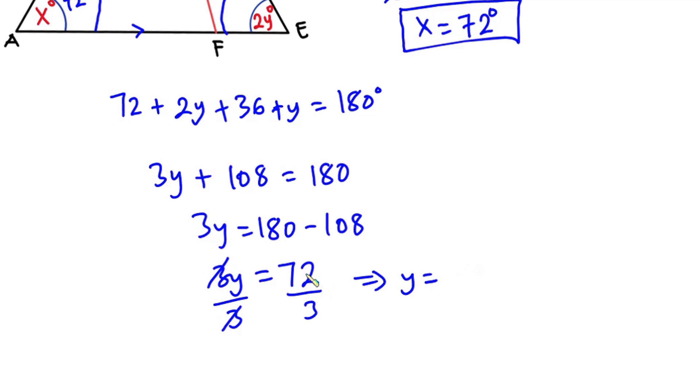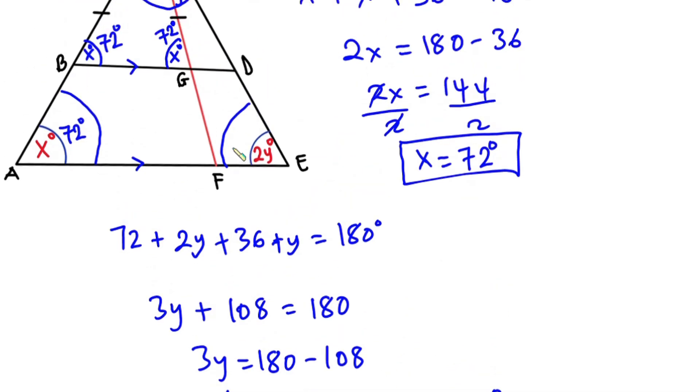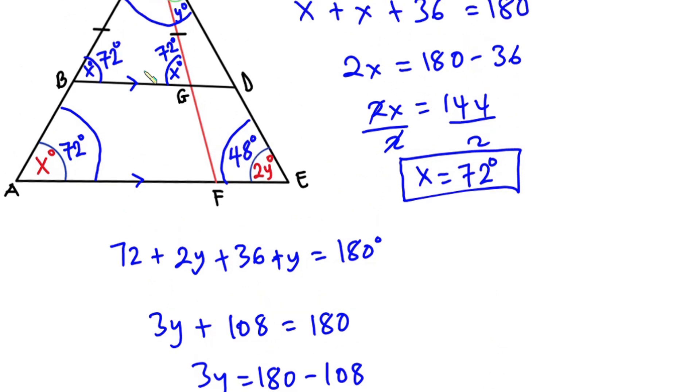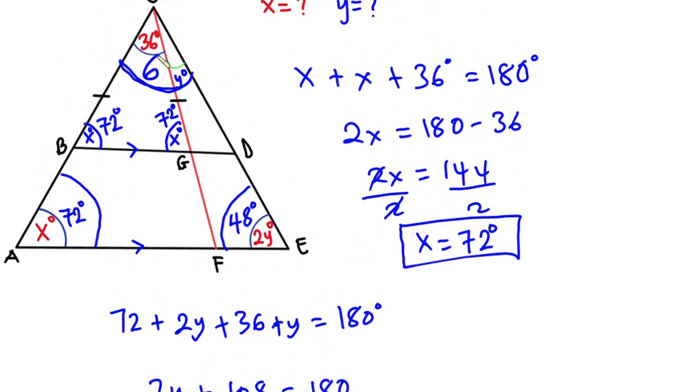Now we have y is equal to 72 divided by 3, which is 24. So we have y to be 24 degrees. What it means is that this angle over here is 48 degrees, and then this angle is 60 degrees.